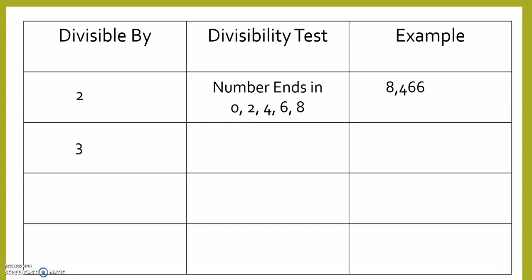Divisible by 3. The sum of the digits is divisible by 3. 525. 5 plus 5 is 10, plus that 2 is 12. 12 is divisible by 3, so 525 is divisible by 3.